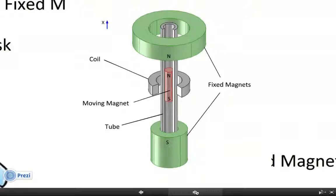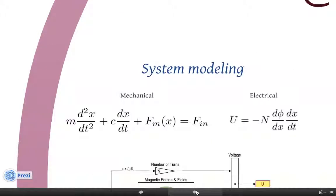By considering the direction of Z as the direction of displacement of the free magnet, we can obtain the mathematical model of the system. On the left you can see the mechanical part, and on the right the electrical part. We have the inertial force, damping force, magnetic force, and the left input force which comes from the breath pressure.